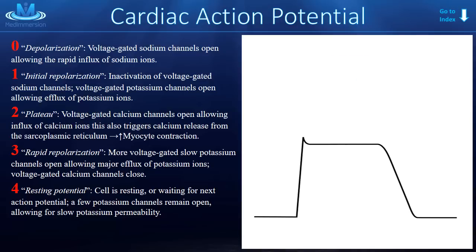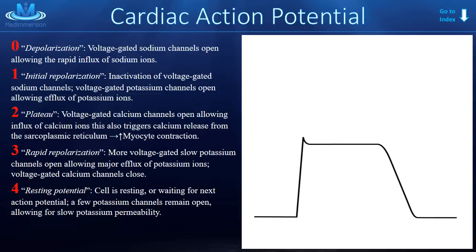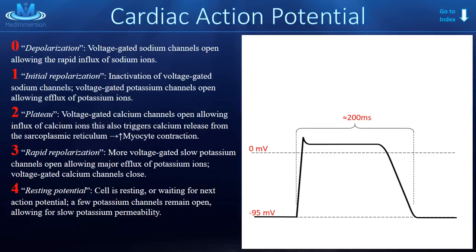On the x-axis we have time, and on the y-axis we have voltage. In the polarized state, the heart rests at about negative 95 millivolts. An action potential cycle takes about 200 milliseconds, though that number changes depending on which part of the heart you're in. The heart starts at about negative 95 millivolts, then very quickly shoots up to about positive 20 millivolts, stays there for a bit, and then the cell starts to repolarize itself.